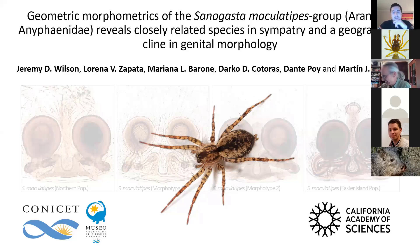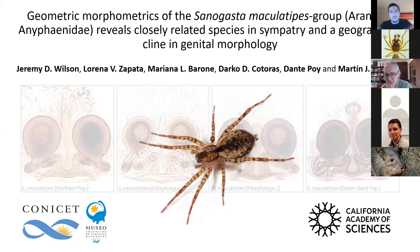We did a study on a species group from the southern cone of South America that has had ambiguous boundaries between species in the past. We used geometric morphometrics along with traditional morphology and molecular phylogenetics to clarify those boundaries.